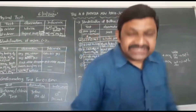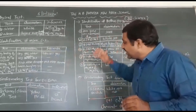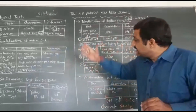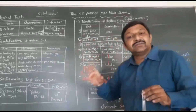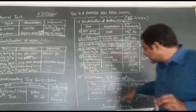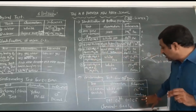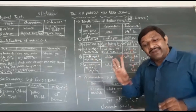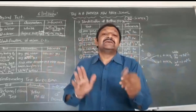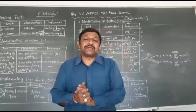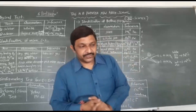We have performed the practical and found the negative ion and positive ion. Your positive ion is Ca²⁺ and your negative ion is Cl⁻, so your compound is CaCl₂ — calcium chloride. Thank you.